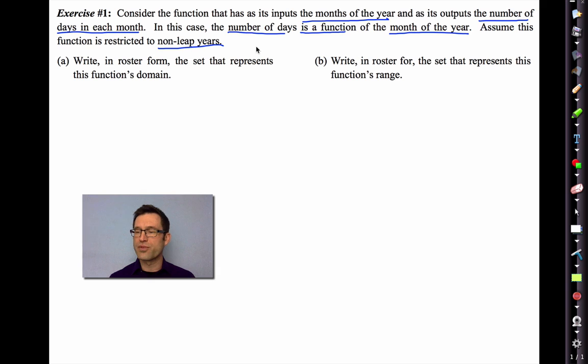Anyway, letter A says write in roster form the set that represents this function's domain. Well, the domain are all the inputs. That's January, February, March, etc. I'm not going to write them all out. You get the picture. There's 12 of them in December. A roster is simply a list. Very often we cannot actually put domains and ranges in roster forms because there's simply too many elements in the domain and range. Perhaps there's an infinite number of them. Perhaps we can't order them. Here, there's 12 of them, so we can write them out.